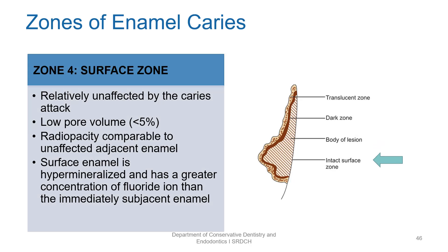The last zone is the surface zone, which is intact and relatively unaffected by the caries attack. It has a very low pore volume and the radiograph shows a radiopacity comparable to unaffected adjacent enamel. This surface enamel is hypermineralized and has a greater concentration of fluoride ion than the immediately subjacent enamel. These are the four zones of enamel caries.